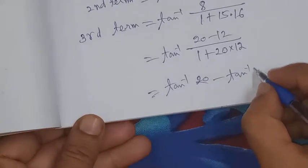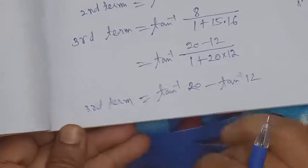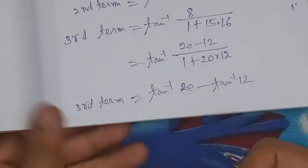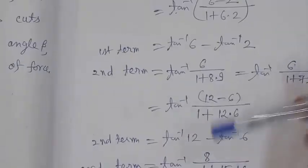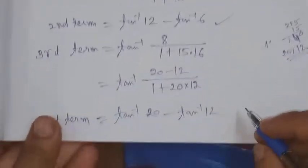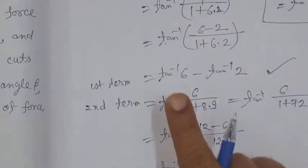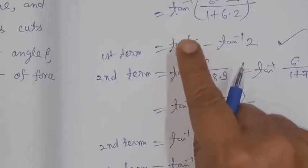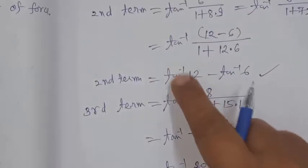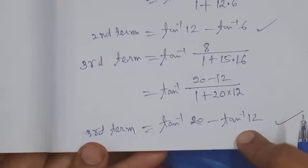So we have the first term as tan⁻¹6 - tan⁻¹2, the second term as tan⁻¹12 - tan⁻¹6, and the third term as tan⁻¹20 - tan⁻¹12. Every term has two parts. Now we need to find the general nth term of this series.